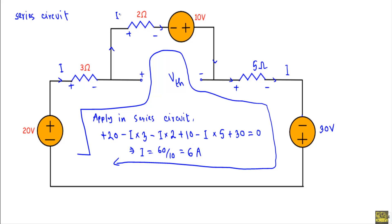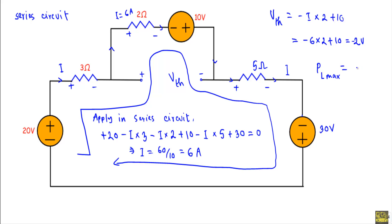Previously I showed that if we know the current through the 2Ω resistor, V_th can be calculated as −I × 2 + 10 = −6 × 2 + 10 = −2V. Therefore, the maximum power delivered to the load resistor is P_L_max = V_th² over 4R_th = (−2)² over (4 × 1.6) = 4 over 6.4 = 0.625 watt.